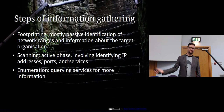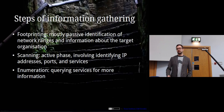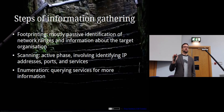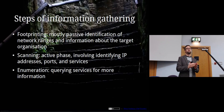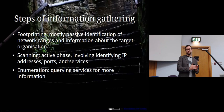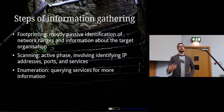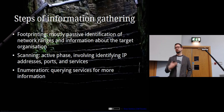Open source intelligence — nothing to do with open source software — is about things that are publicly available on the internet, like looking at job adverts. Once you have all that information, you go on to scanning, which is an active phase where you're actually identifying each of the live IP addresses. Then there's an enumeration stage, often tied into the scanning phase, where you start querying the services for more information.